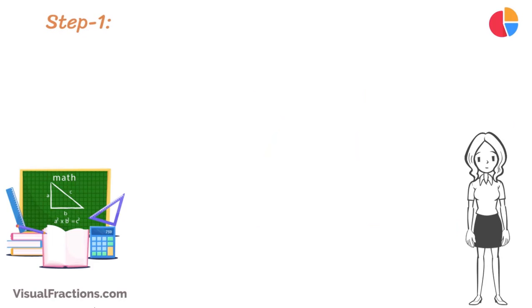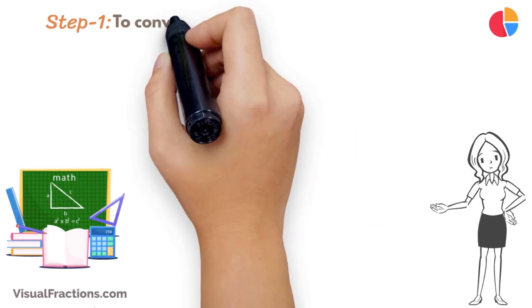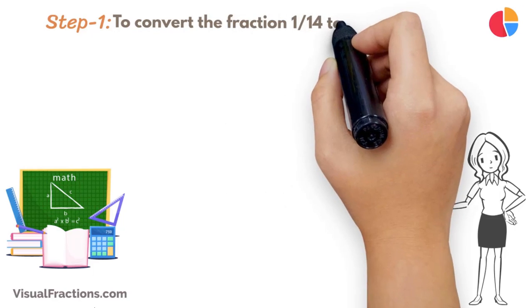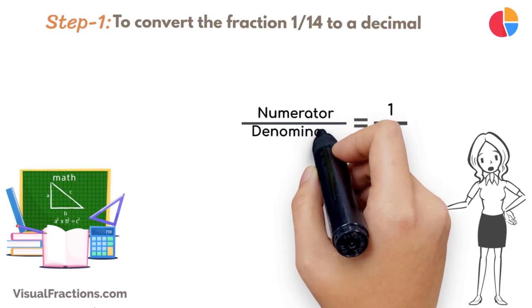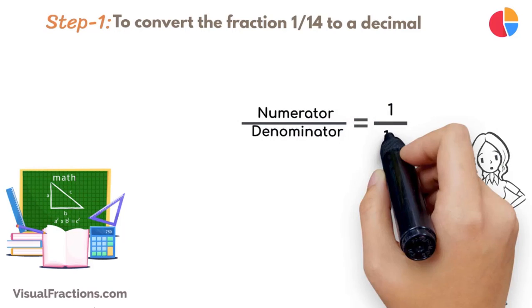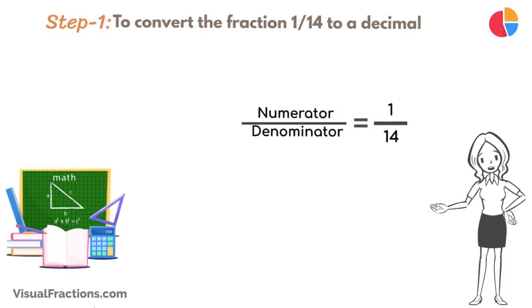The first step in converting the fraction 1/14th to a percent is to convert this fraction to a decimal. We do this by dividing the numerator, the top number, which is 1, by the denominator, the bottom number, which is 14.